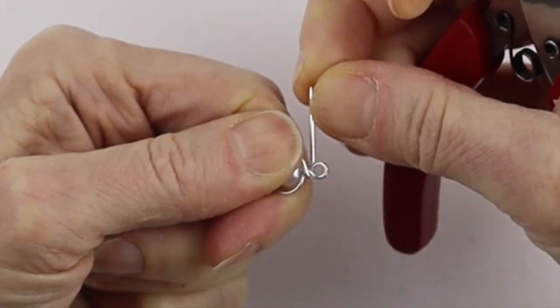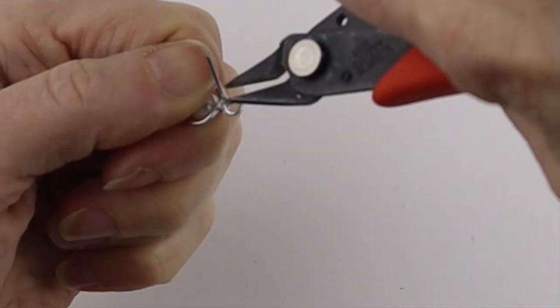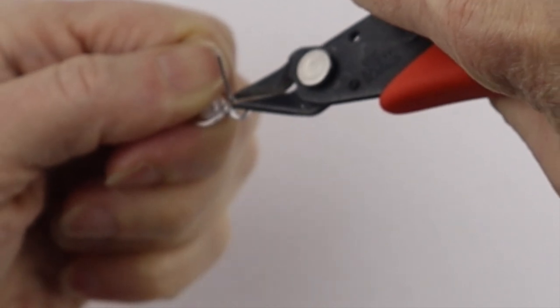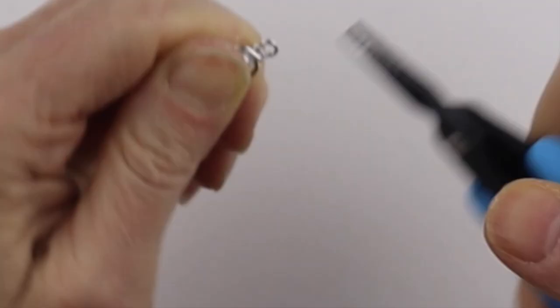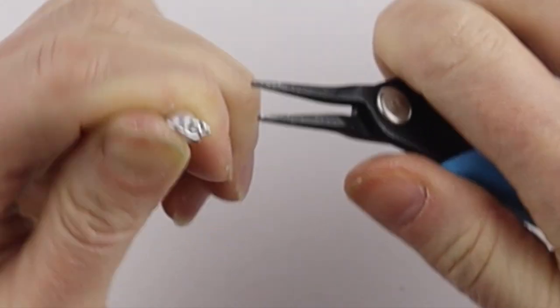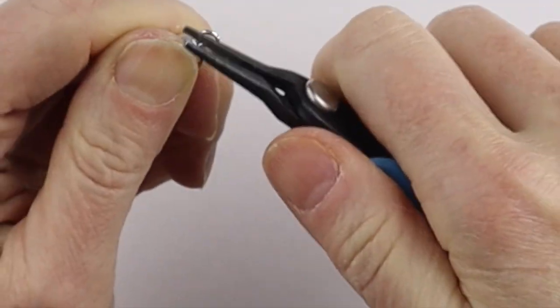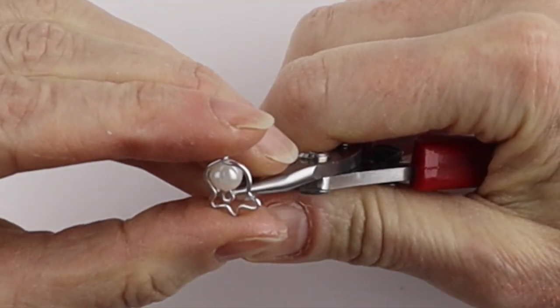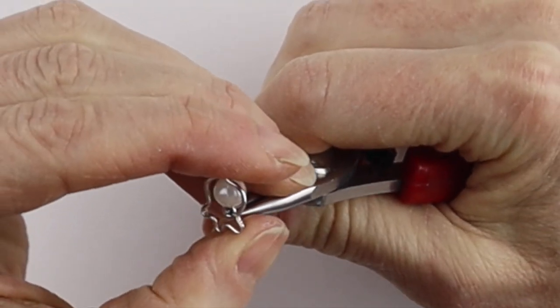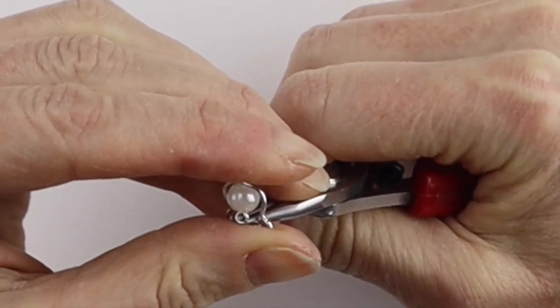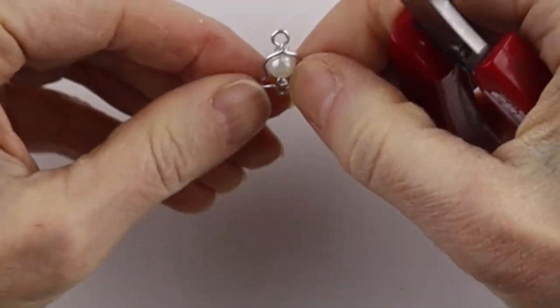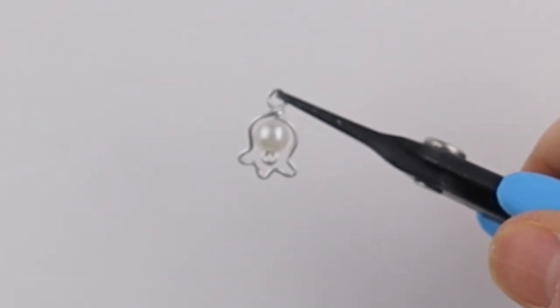Hold it and bring it around, then clip it. Pinch it down so it's flush. You can put the round pliers back in that loop and adjust it so it's centered. And there we have the lily of the valley.